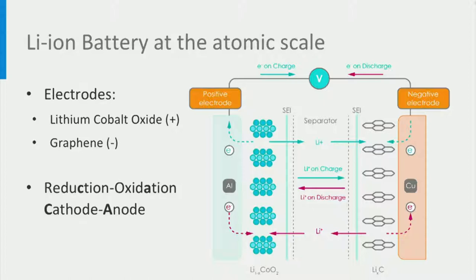Lithium is relatively weakly bonded in the graphite, the negative electrode, compared to the LCO, the positive electrode. The resulting chemical driving force for lithium to move from the graphite towards the LCO expresses itself as battery voltage.